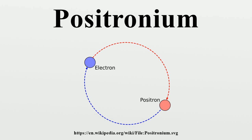The ground state of positronium, like that of hydrogen, has two possible configurations depending on the relative orientations of the spins of the electron and the positron. The singlet state, 1s0, with antiparallel spins is known as parapositronium.